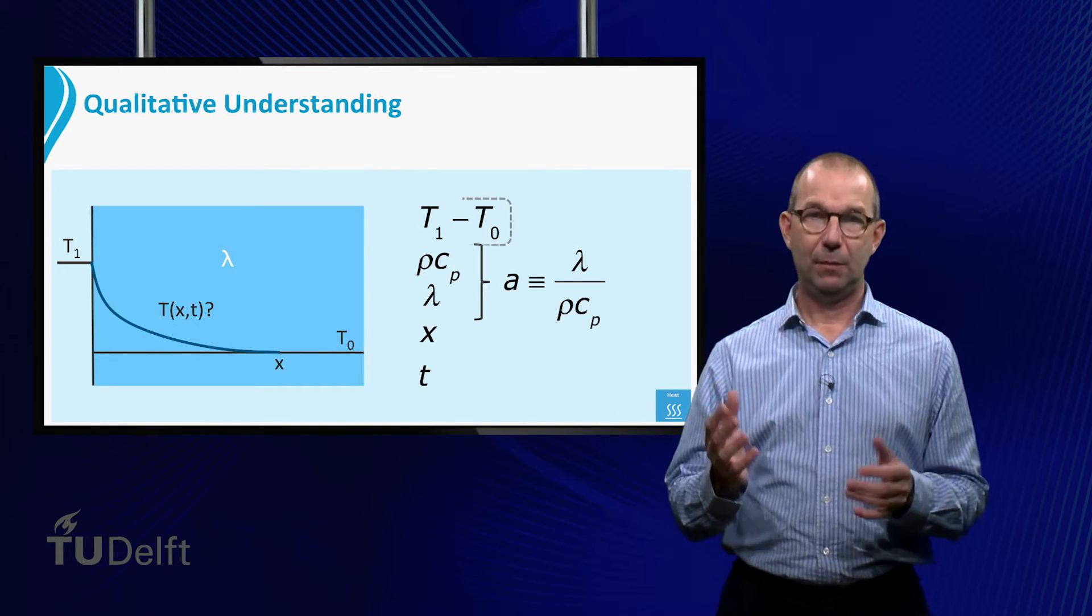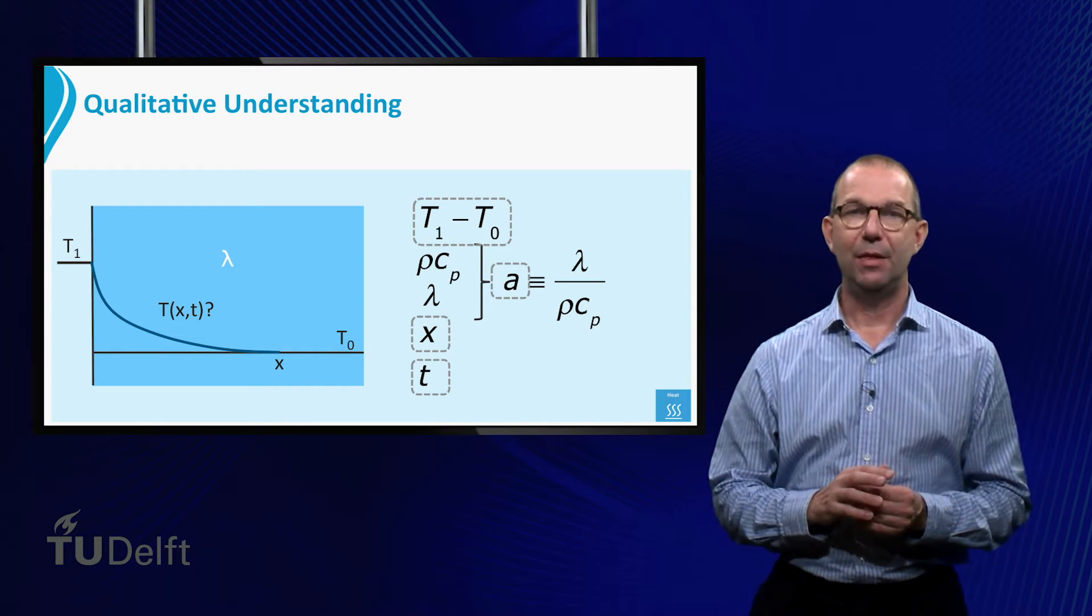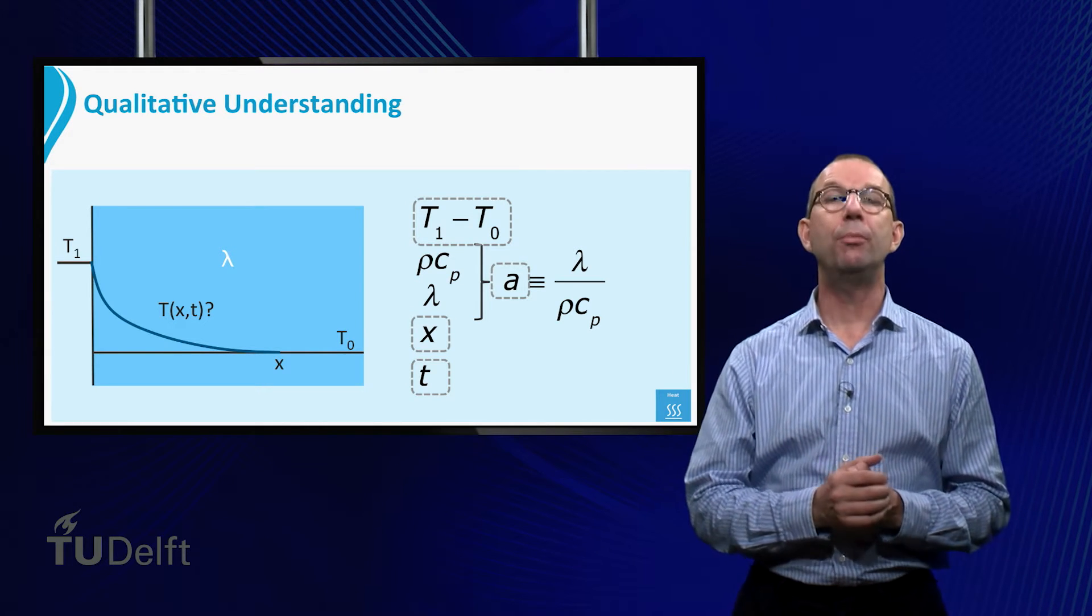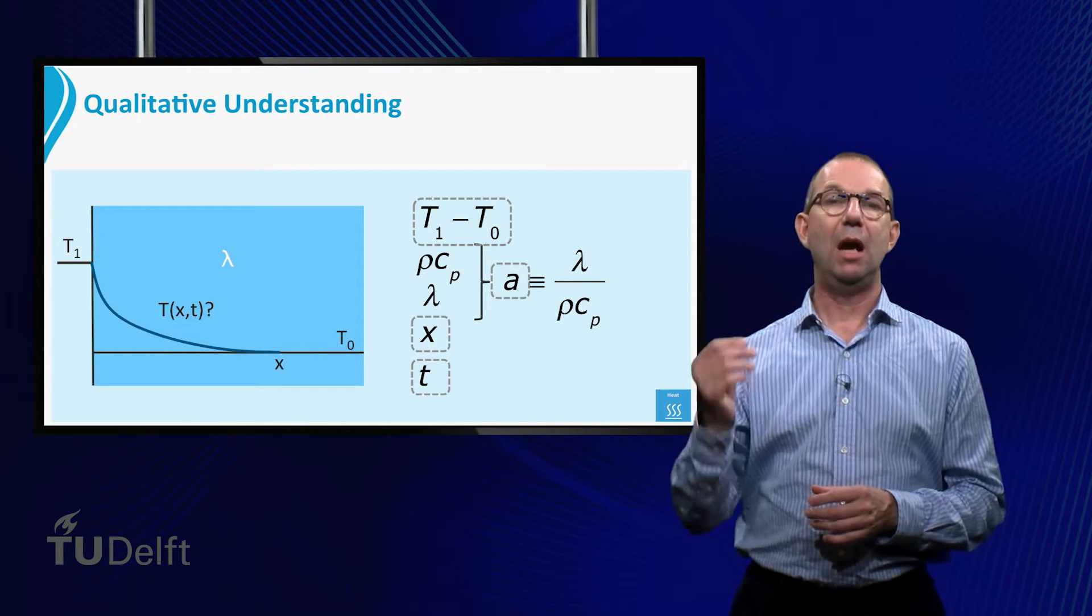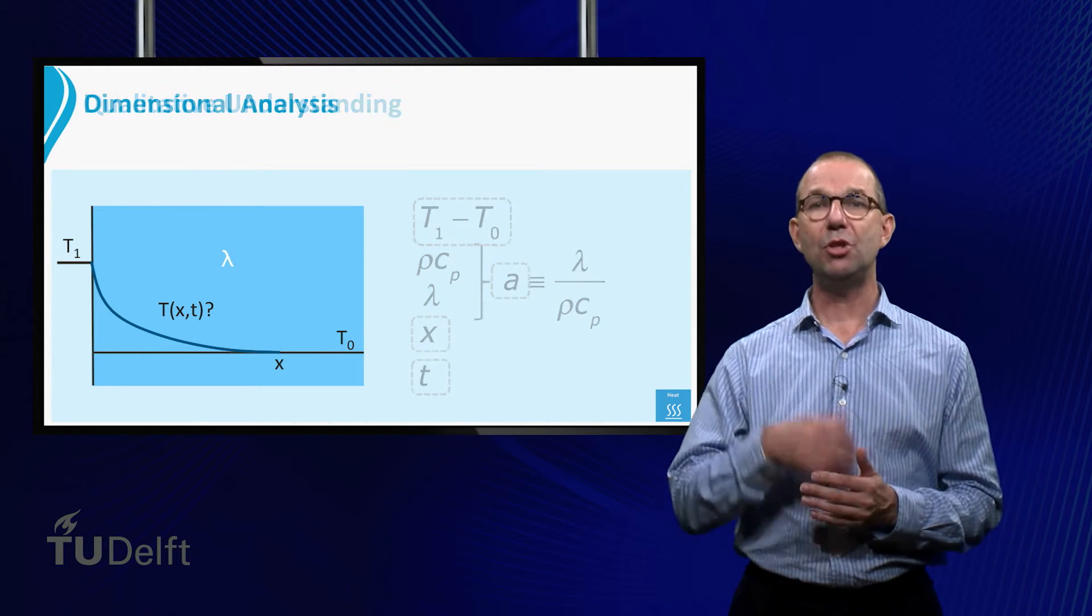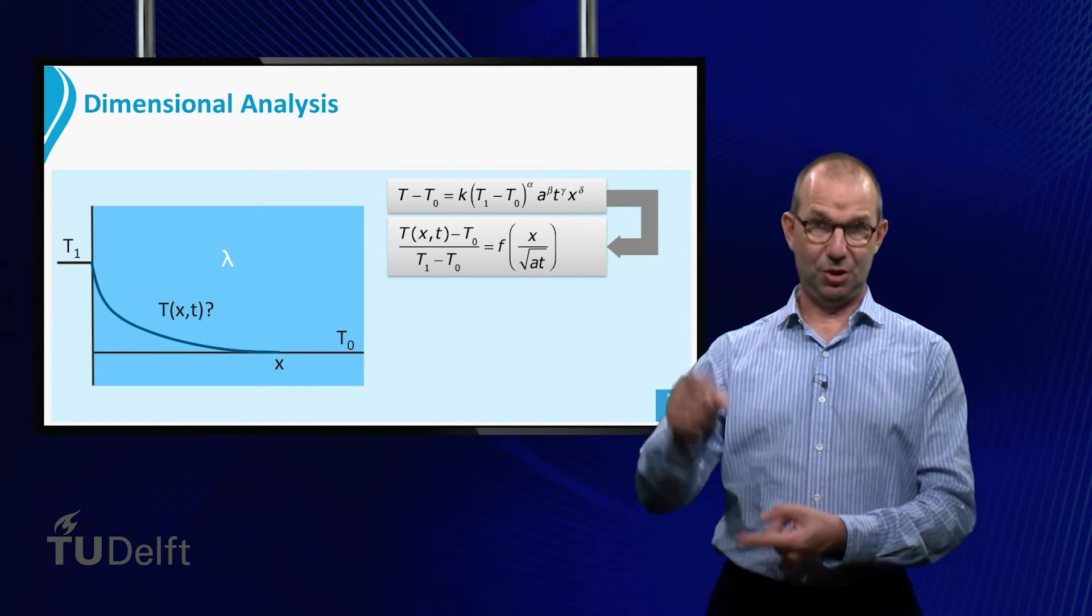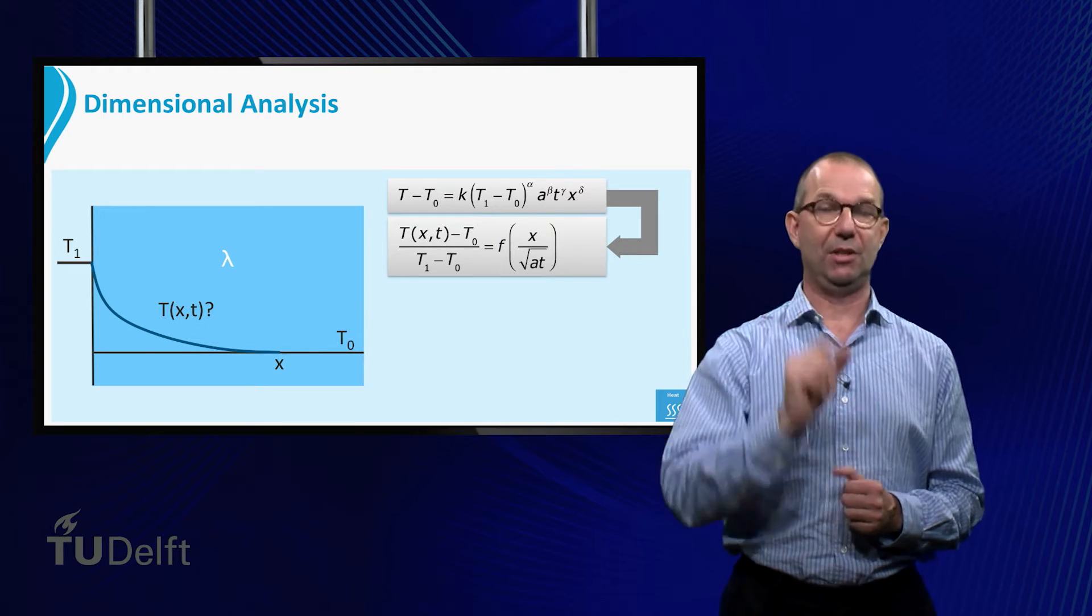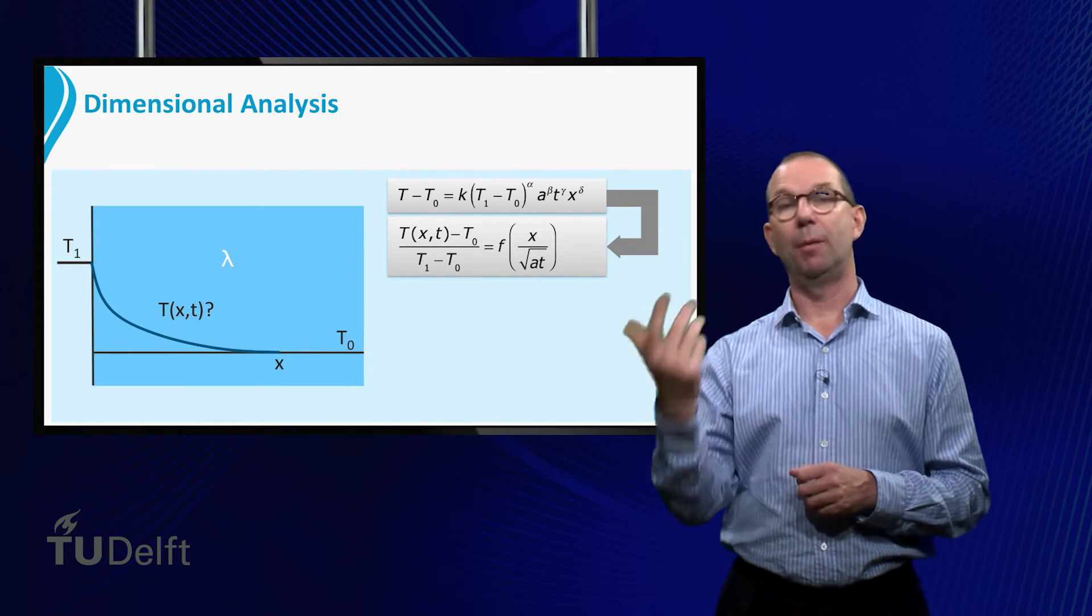Looking back, we see that we have four parameters that govern this problem, and that thus dictates the temperature change in the plate. We can perform a dimensional analysis on this problem, trying to find the temperature rise at position x at time T. The result would be that the temperature rise normalized by the driving temperature difference T1 minus T0 is a function of only one parameter, namely x over the square root of A times T.